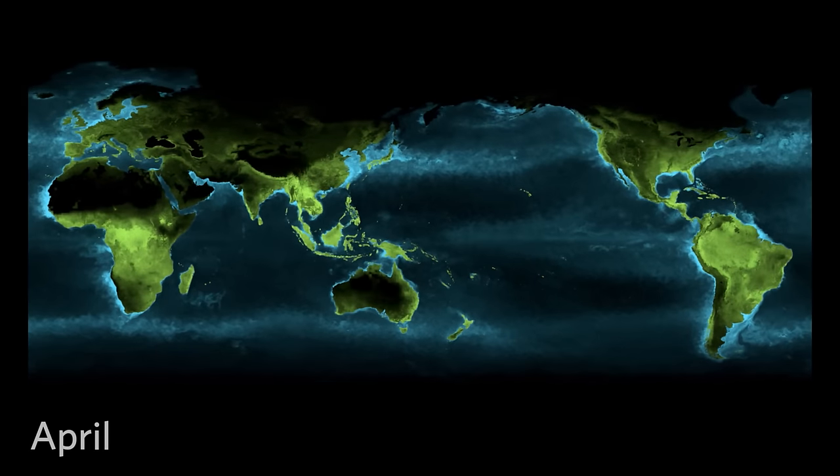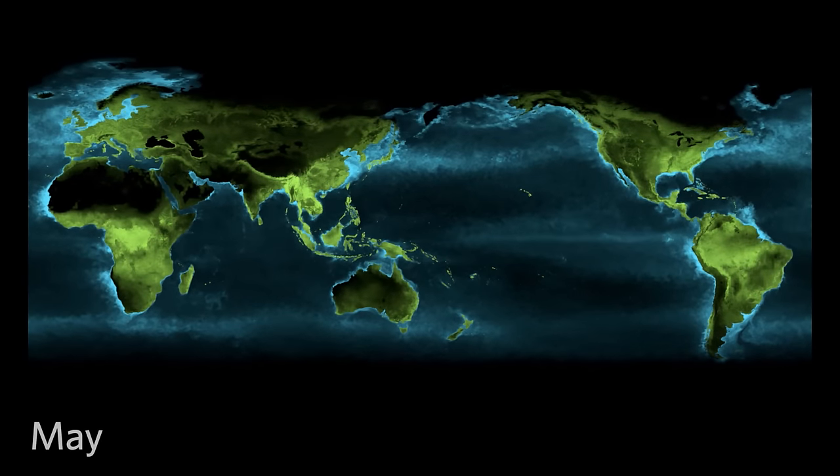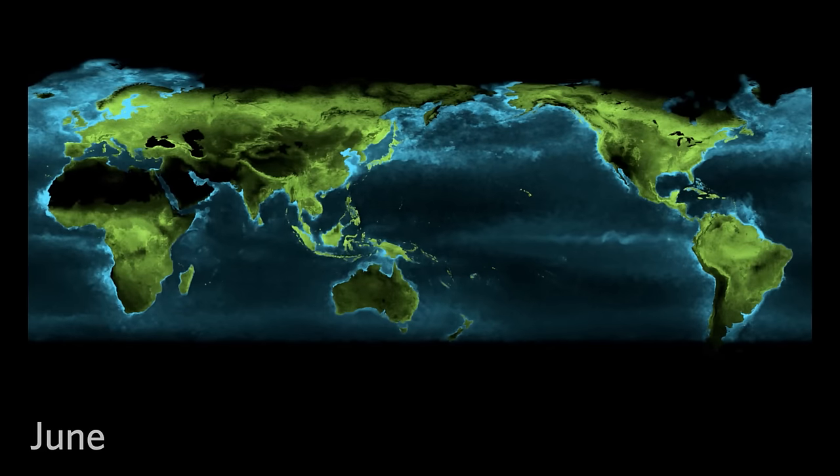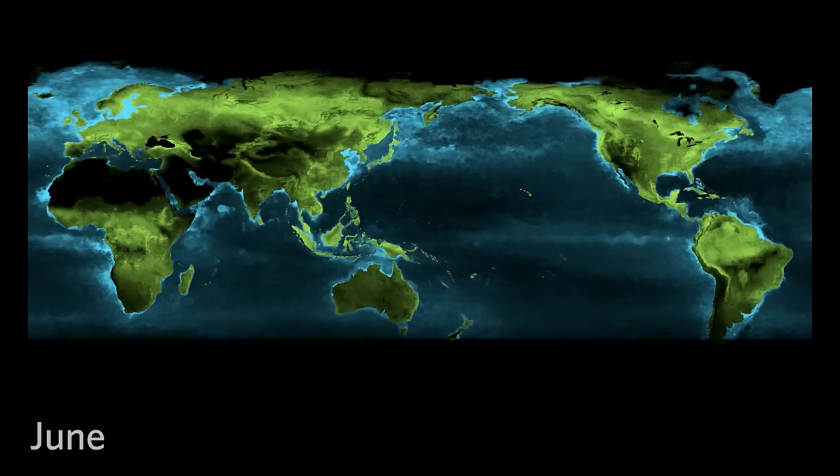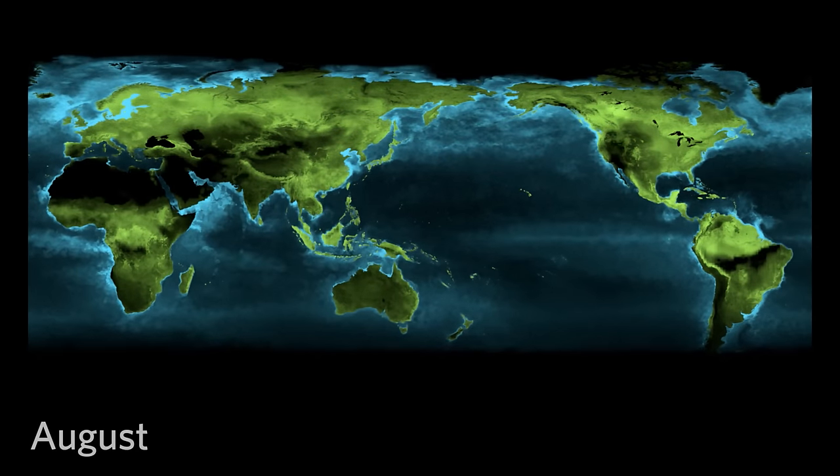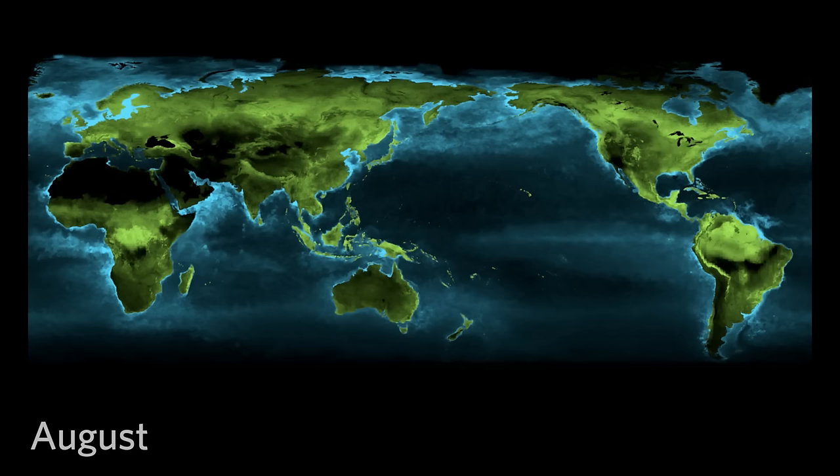In spring, when sunshine strikes the cold waters of the North Pacific, productivity skyrockets. Phytoplankton and other microscopic photosynthesizers form the base of the ocean food web. And all ocean life responds to changes in the seasons.